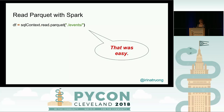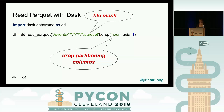To read Parquet with Spark is very easy — it's just a one-liner, providing a path. To read Parquet with Dask, I call the DD read_parquet method — DD is a Dask DataFrame — providing a file mask. Then I drop my partitioning columns because after reading the data, I don't need them anymore.